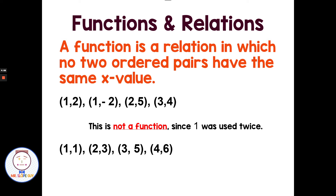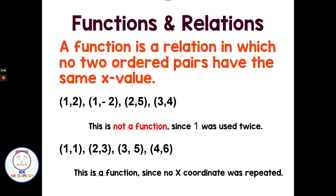Let's say we're given ordered pairs (1, 1), (2, 3), (3, 5), (4, 6). If I go through and look at these x values, I have 1, 2, 3, 4 — and notice how no numbers are repeating. If each x is only used once, then it meets our definition of a function. Also remember, 1 and negative 1 are two different numbers — you can have a 1 and a negative 1 in x and it not be repeating. Each number must be unique for the domain, for the x value.